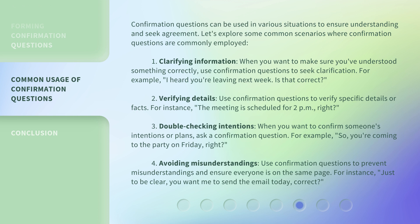2. Verifying details: use confirmation questions to verify specific details or facts. For instance, 'the meeting is scheduled for 2 p.m., right?' 3. Double-checking intentions: when you want to confirm someone's intentions or plans, ask a confirmation question. For example, 'so, you're coming to the party on Friday, right?' 4. Avoiding misunderstandings: use confirmation questions to prevent misunderstandings and ensure everyone is on the same page.